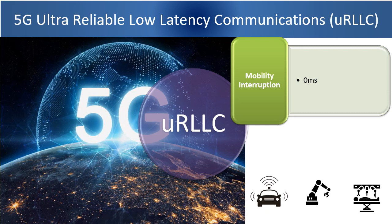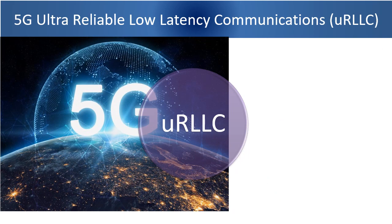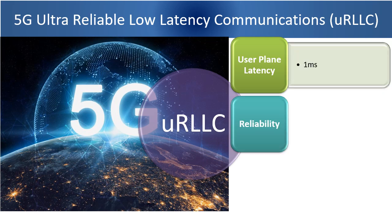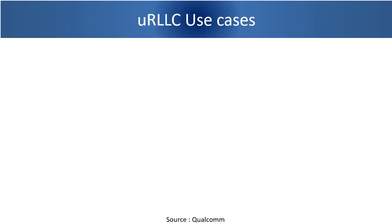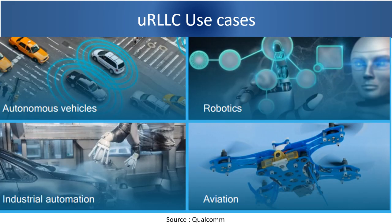Let us summarize 5G radio key performance requirements to support URLLC type of services. User plane latency has to be 1 millisecond for URLLC. Reliability has to be ultra-reliable, i.e., 10 to the power of minus 6 bit error rate, or 99.9999% in percentage terms. Mobility interruption has to be 0 millisecond. Some of the use cases based on URLLC are autonomous vehicles, robotics, industrial automation, aviation, and so on.